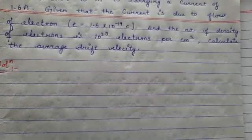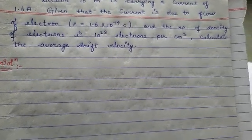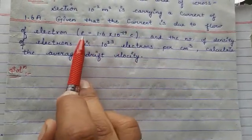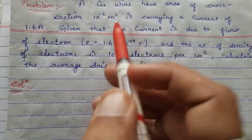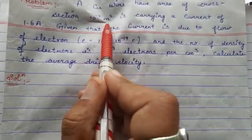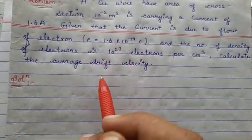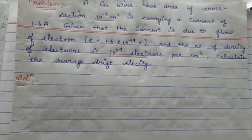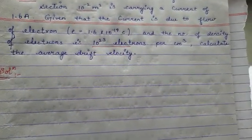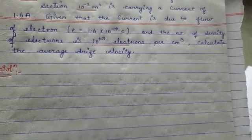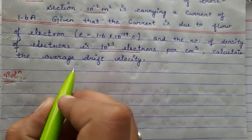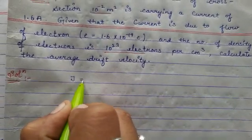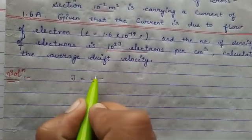First of all, let's look at what is given. We know the charge on the electron, the cross-sectional area is given, and the density of electrons is also given. We are going to find out the average drift velocity. Drift velocity is denoted by J.